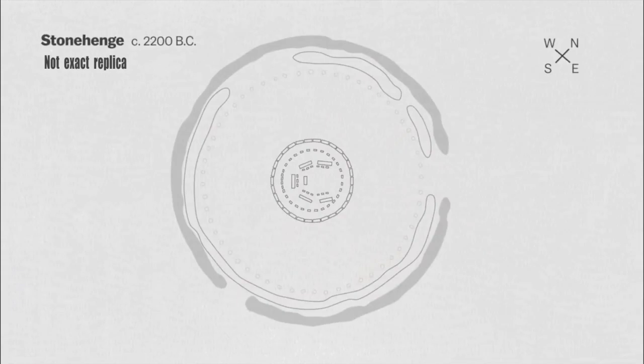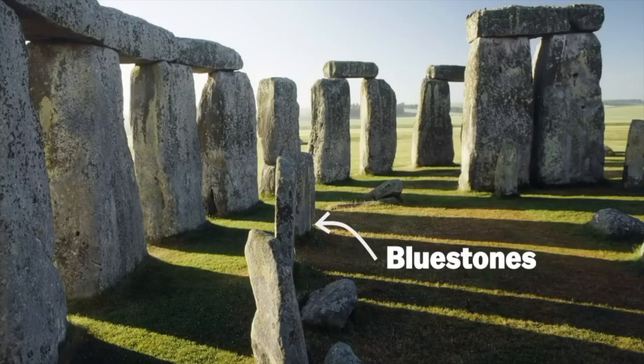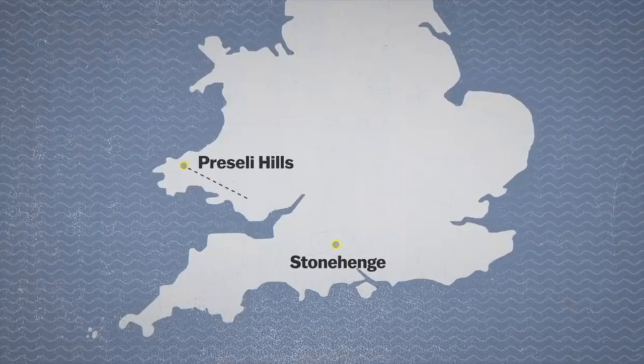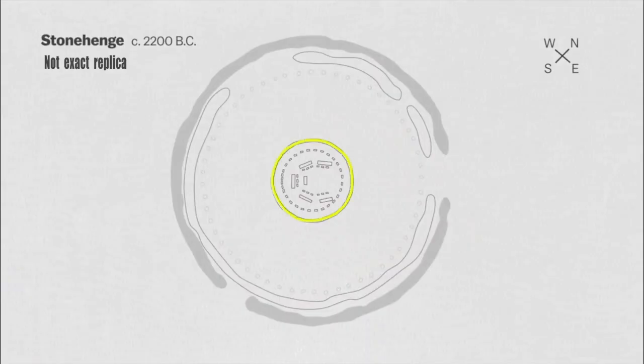Inside the trilithons there are 19 petal-shaped stones called the Blue Petal, and near the center of the petal lies a carved 4.8-meter-long gray-blue sandstone called the Altar Stone. Around the five triliths there is a circle of 59 smaller blue stones, called the Blue Stone Circle, which were carved and transported from Welsh quarries about 200 kilometers away from Stonehenge.